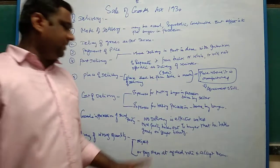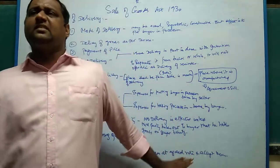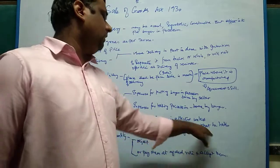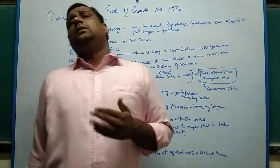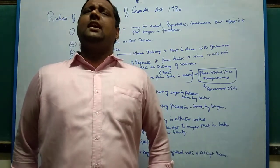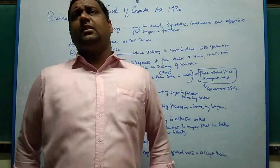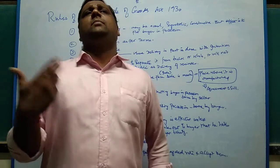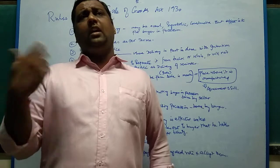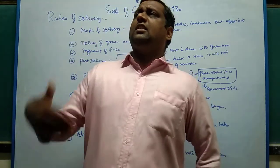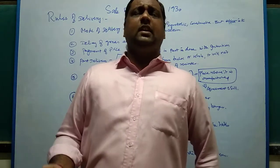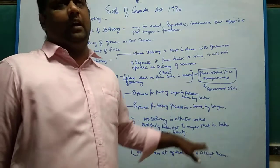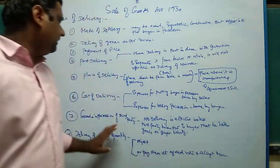Seventh rule: goods in possession of a third party. This is the constructive delivery scenario. No delivery is affected unless the third party holding the goods holds out to the buyer that he holds the goods on the buyer's behalf. Whenever the third party to whom the goods are delivered acknowledges and says: 'I am holding the goods on your behalf; when you make payment of the price, I will deliver the goods to you' — only then is there delivery. Unless the third party issues that statement acknowledging the goods on behalf of the buyer, there can be no delivery at all.